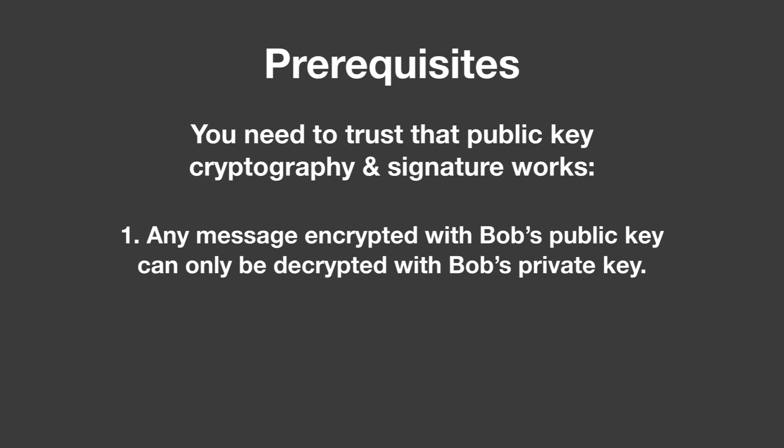You should trust that any message that has been encrypted with Bob's public key — and Bob's public key is public, it's out there for everyone — can only be decrypted with Bob's private key. So basically that means only Bob, because he's the only owner of his private key, can decrypt this message, even though it can be publicly distributed and everyone can listen to it, but no one can do anything with it because they just see some random bytes.